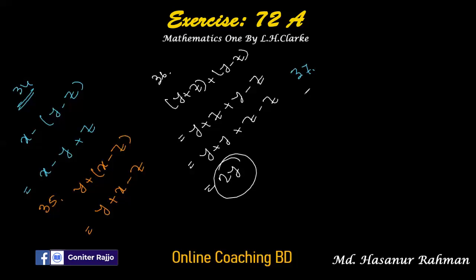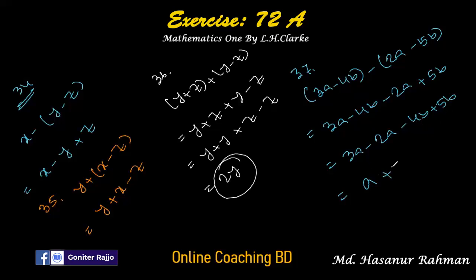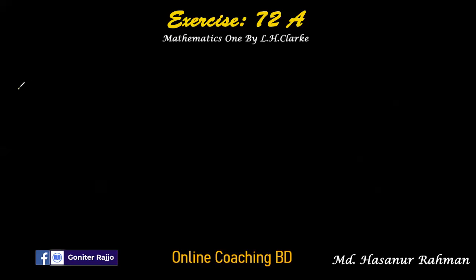Number thirty-seven: 3a minus 4b minus (2a minus 5b). Expanding: minus into 2a is minus 2a, minus into minus 5b is plus 5b. Rearranging: 3a minus 2a is a; minus 4b plus 5b: the signs are different so we subtract, giving plus b. The answer is a plus b.